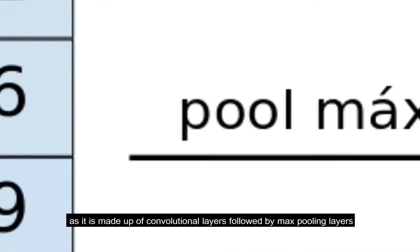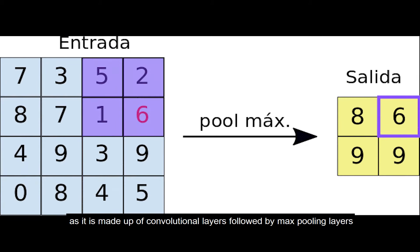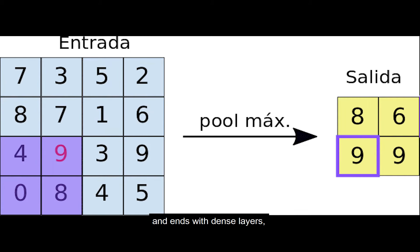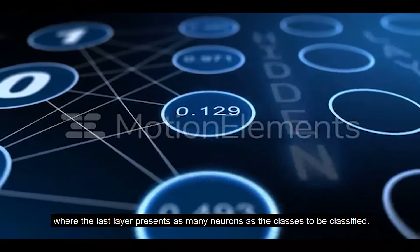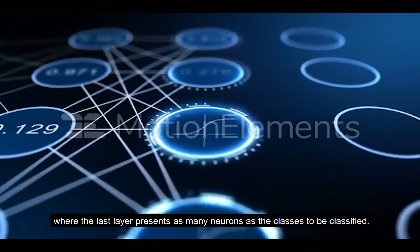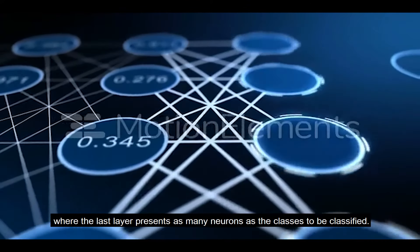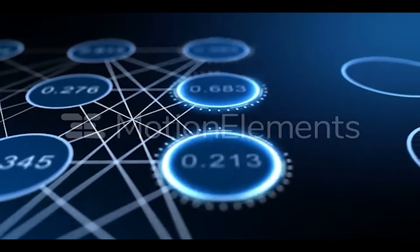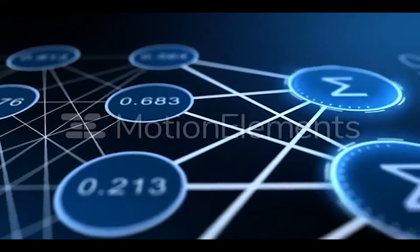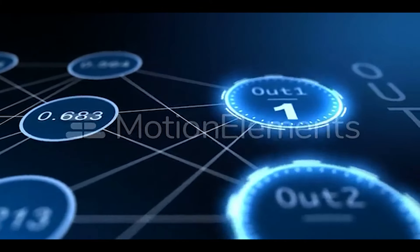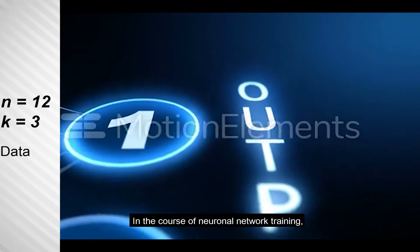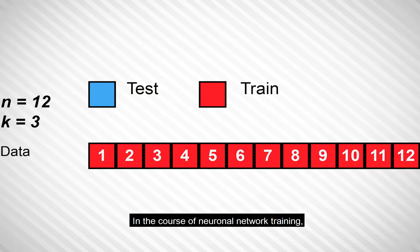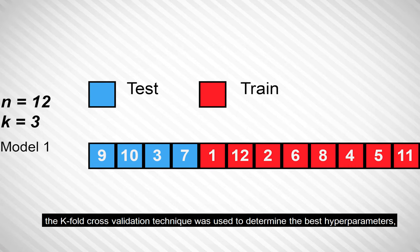The architecture was inspired by that of the AlexNet neural network, as it is made up of convolutional layers followed by max-pooling layers, and ends with dense layers where the last layer presents as many neurons as the number of classes to be classified.